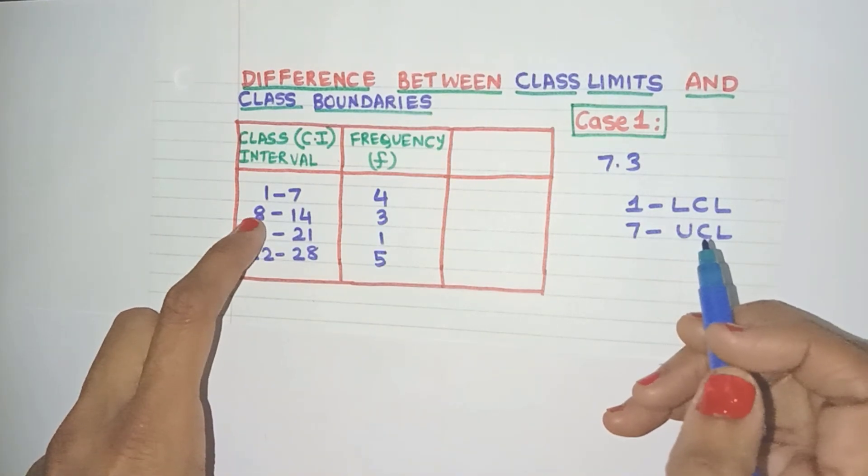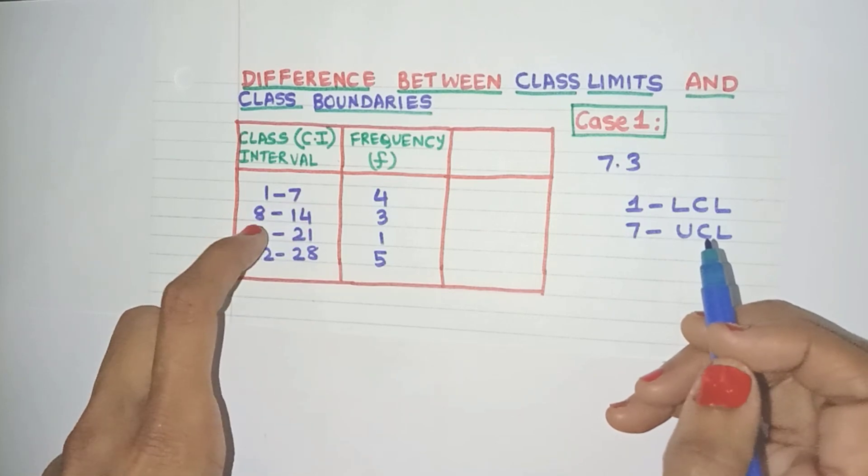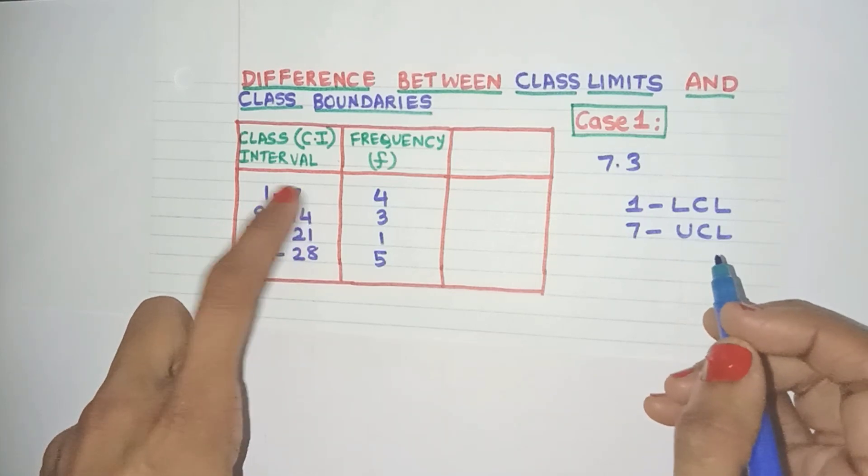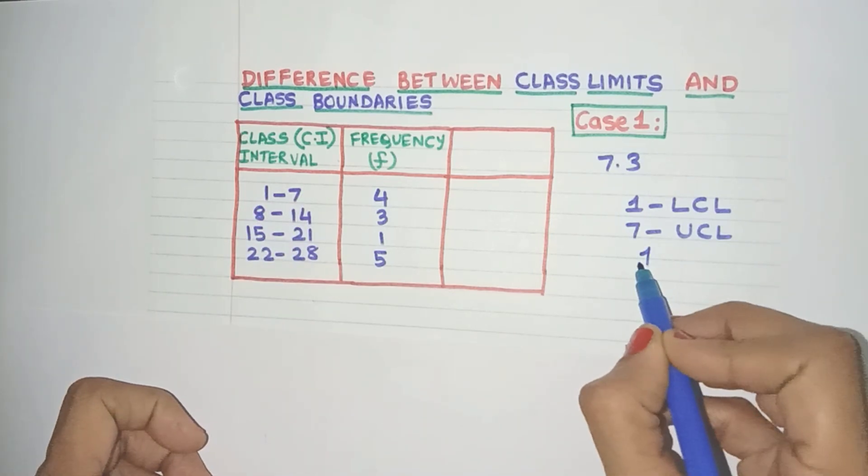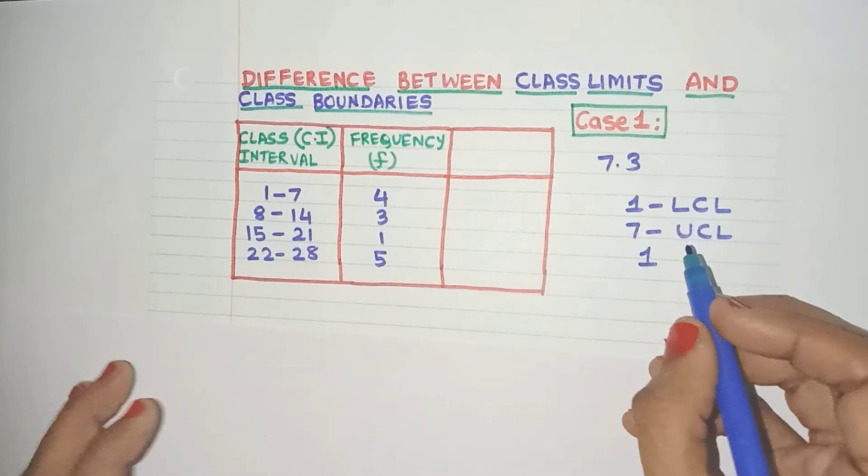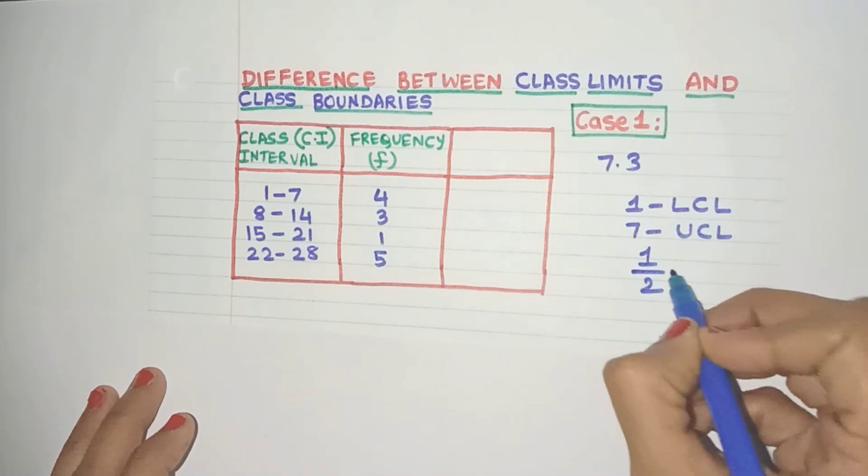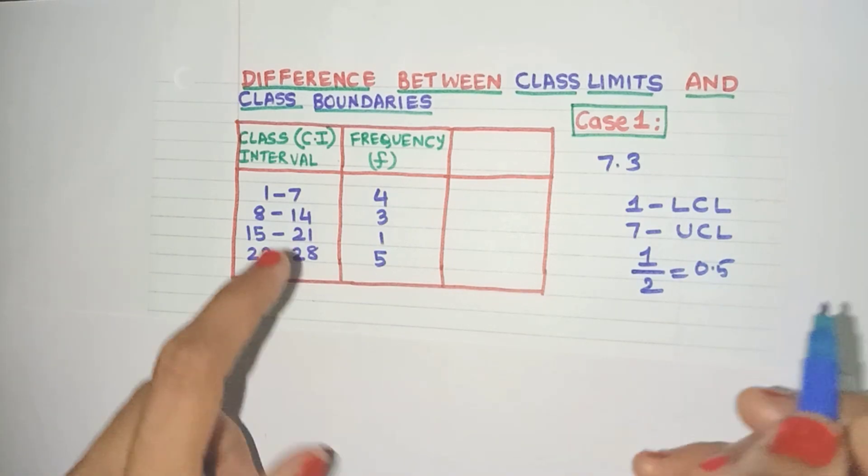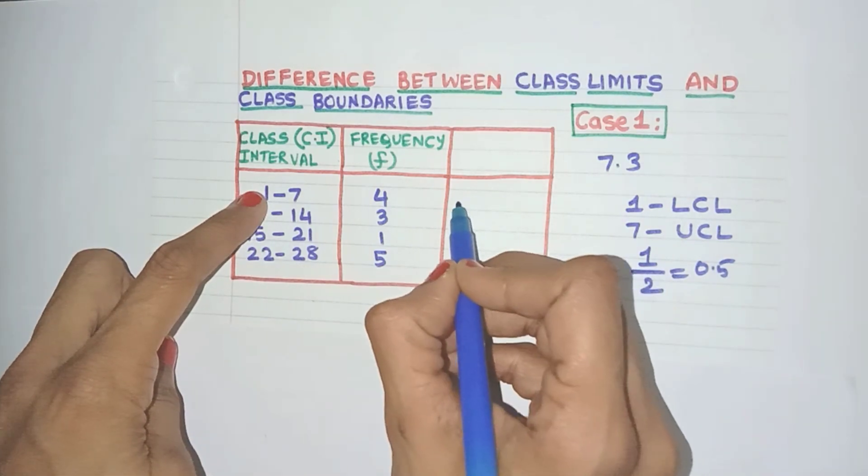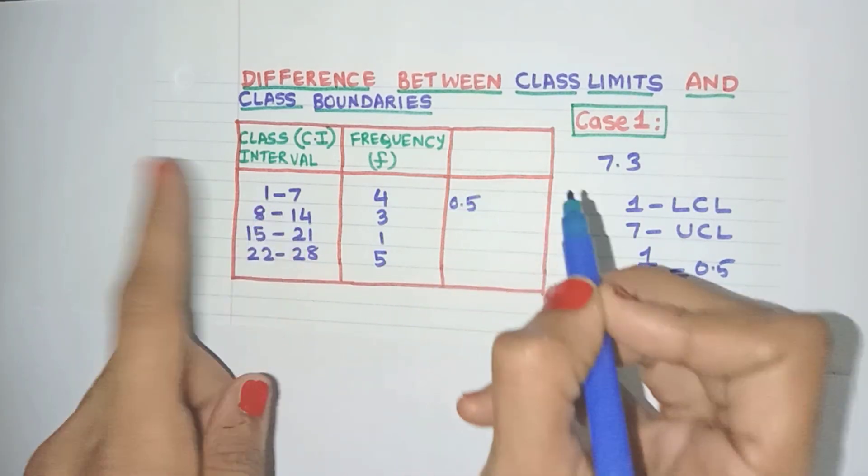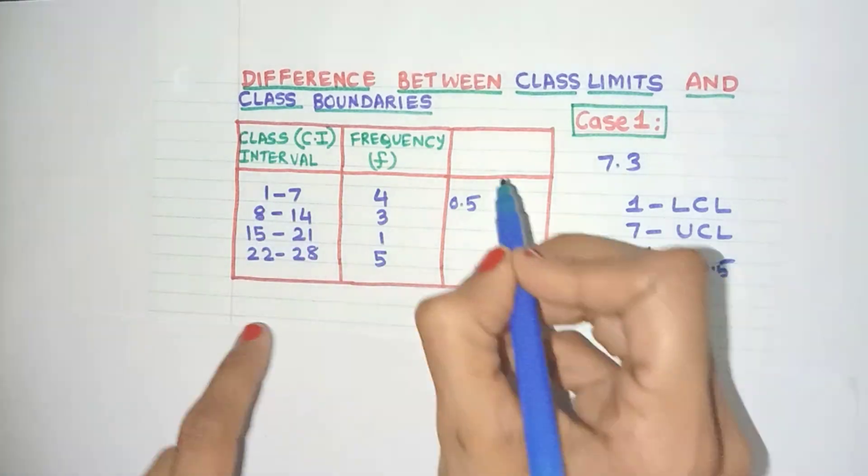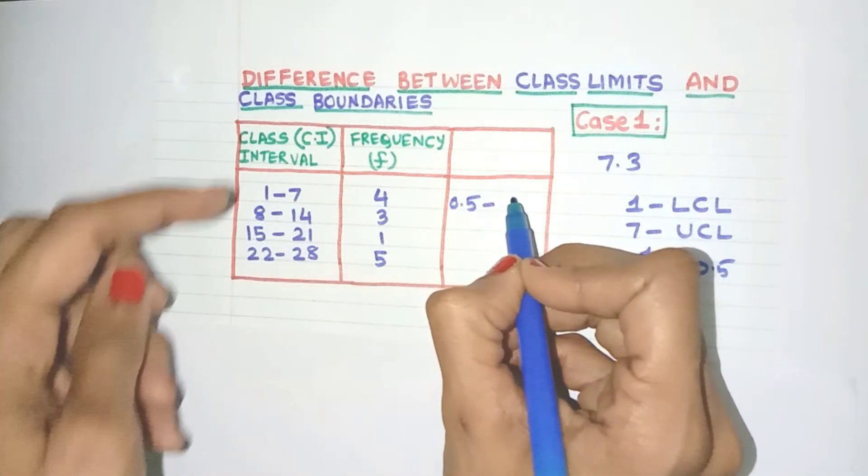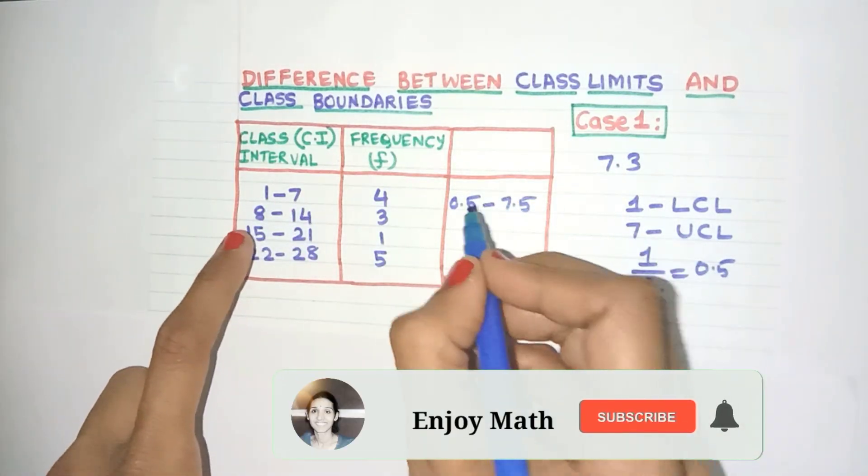Just subtract the upper limit and the lower limit of the previous class. So here let me take 8 and 7. 8 minus 7 will give you 1. Usually the gap is 1 only. Just divide it by 2. What will we get? 0.5. Now subtract this 0.5 from the lower class limit. So let me do that and add the 0.5 to the upper class limit and do it for every class interval like this friends. So let me do it.